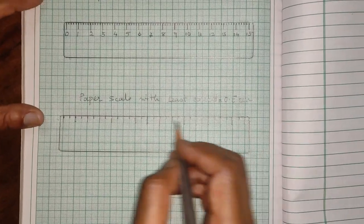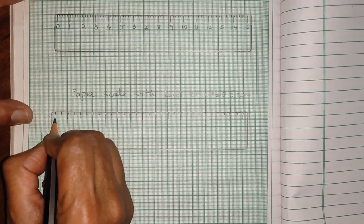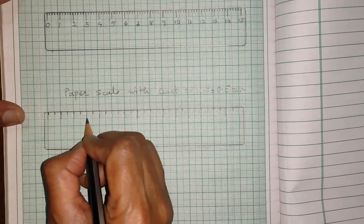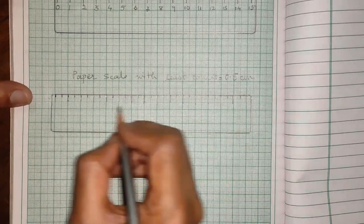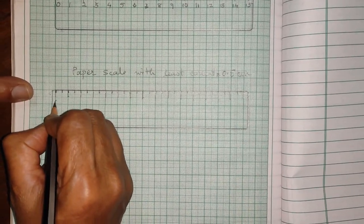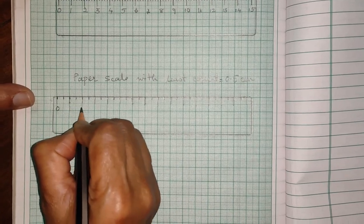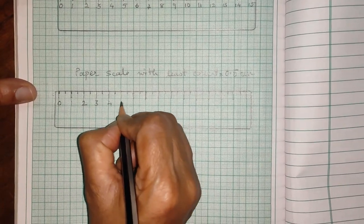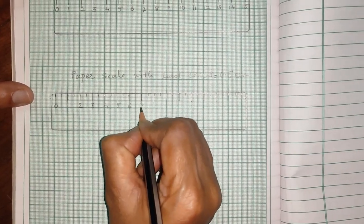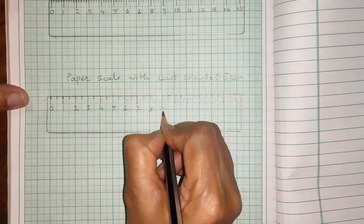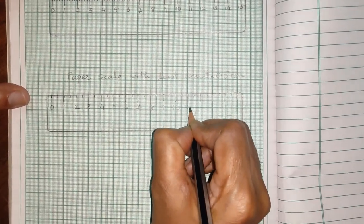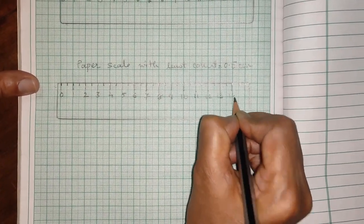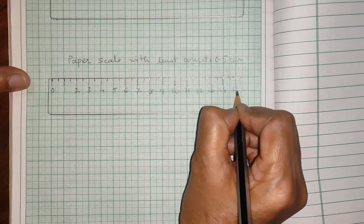After marking, extend these lines of 0, 1 cm, 2 cm, 3 cm, and so on for each cm line. And then, write, 0, 1, 2, 3, 4, 5, 6, 7, 8, 9, 10, 11, 12, 13, 14, and 15, right?